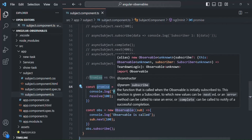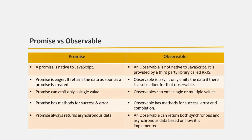Let's see another difference. A Promise can emit only a single value — using a Promise you cannot emit multiple values. But an Observable can emit single or multiple values. As we learned in the very first lecture of this section, using an Observable we can handle a stream of data, but using a Promise we can only emit a single value.